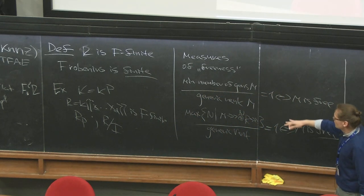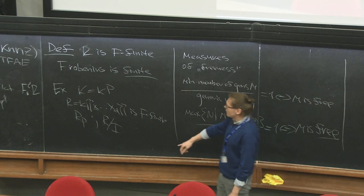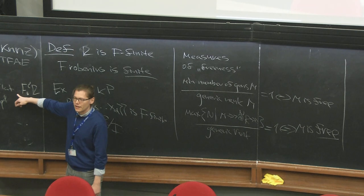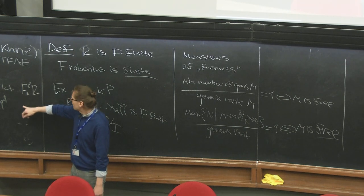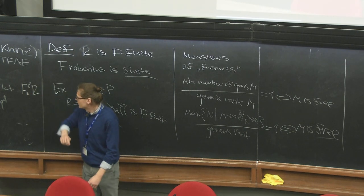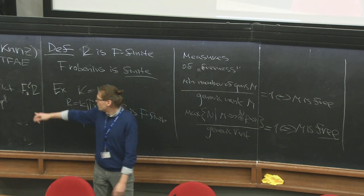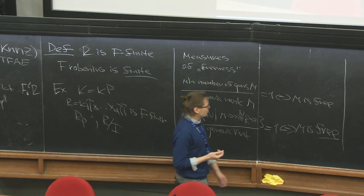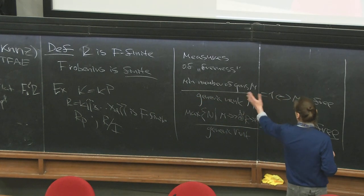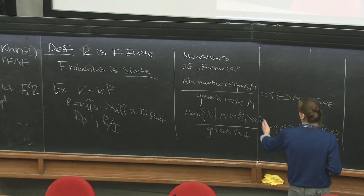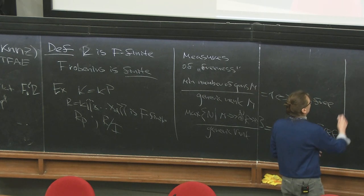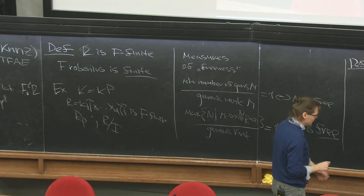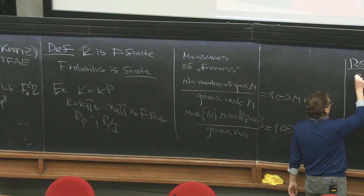The next natural idea is: if I don't have just one module but a sequence of them — as E varies, all of them are going to be finitely generated free modules. A natural question is to look at what happens with those invariants as I vary E. This is what gives us the definitions of Hilbert-Kunz multiplicity and f-signature.